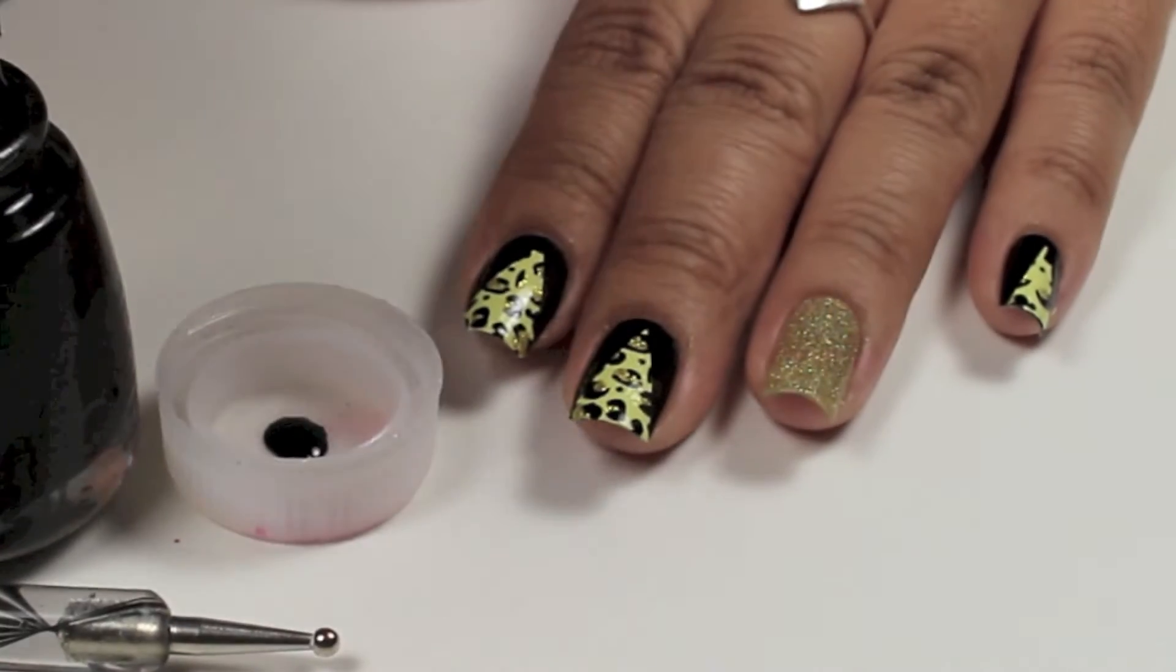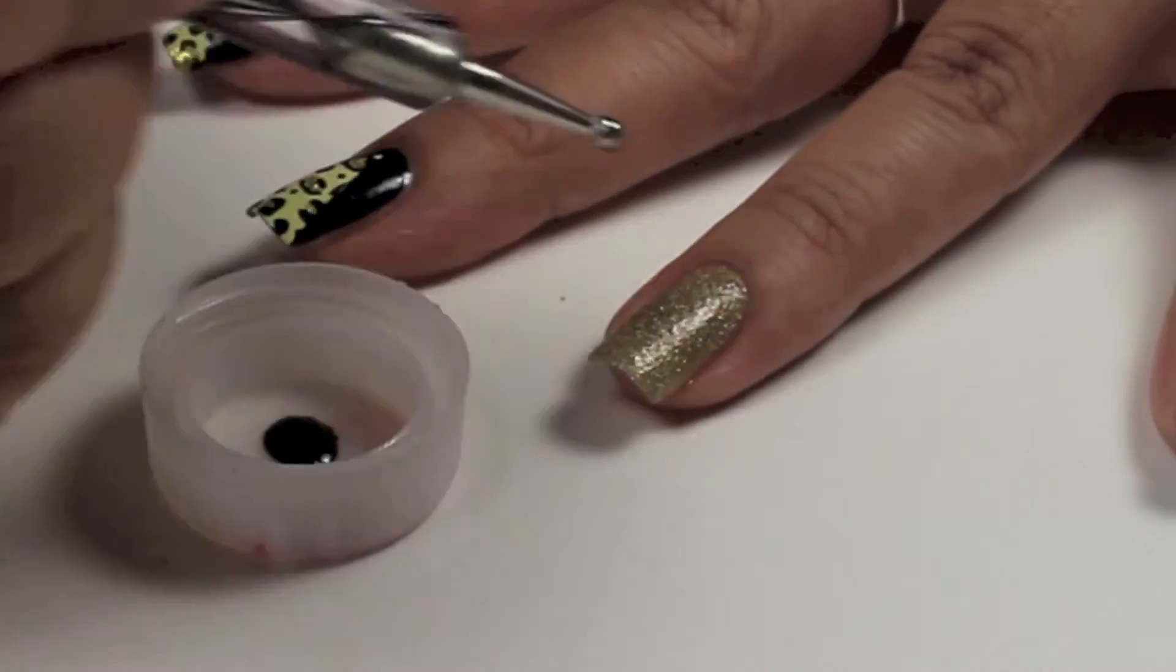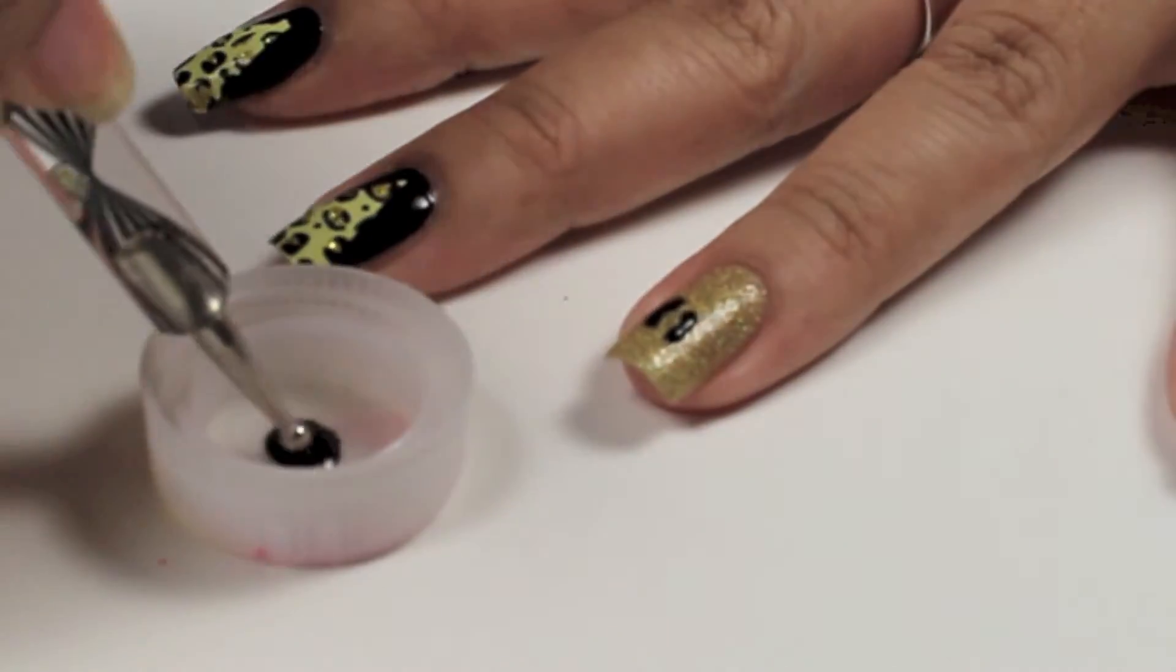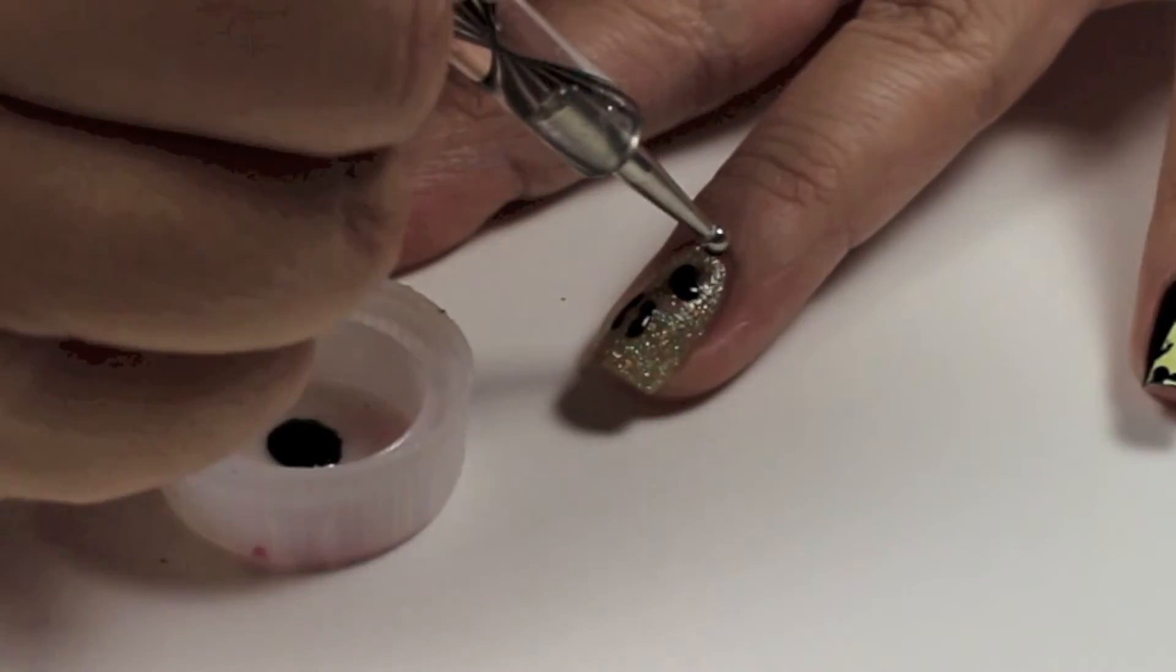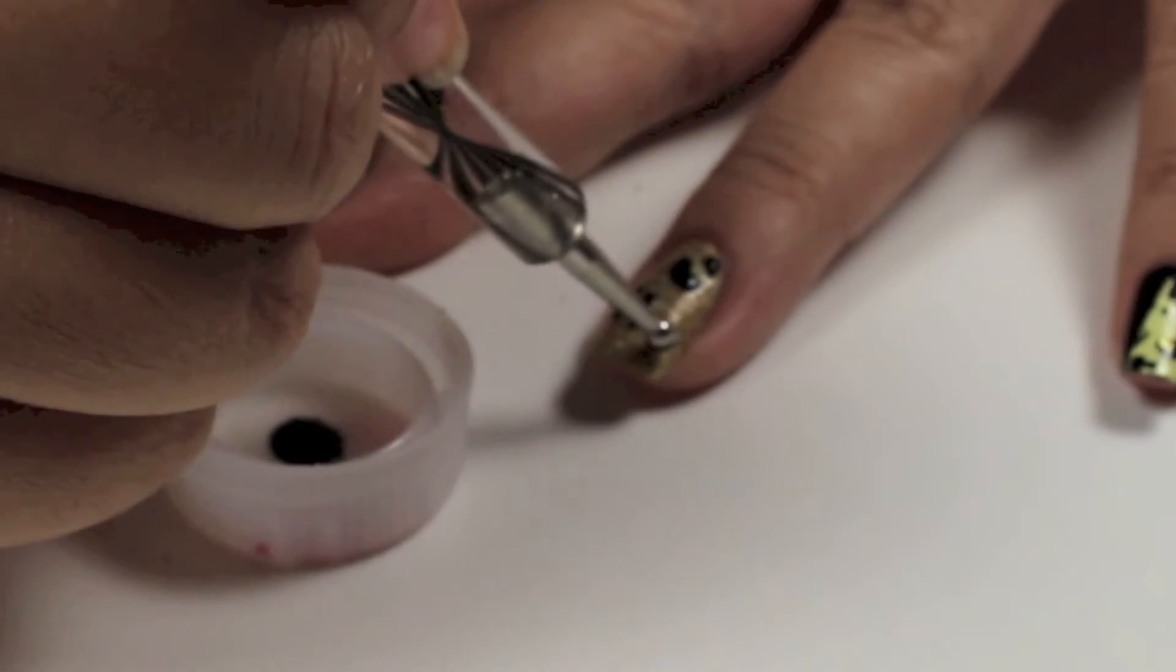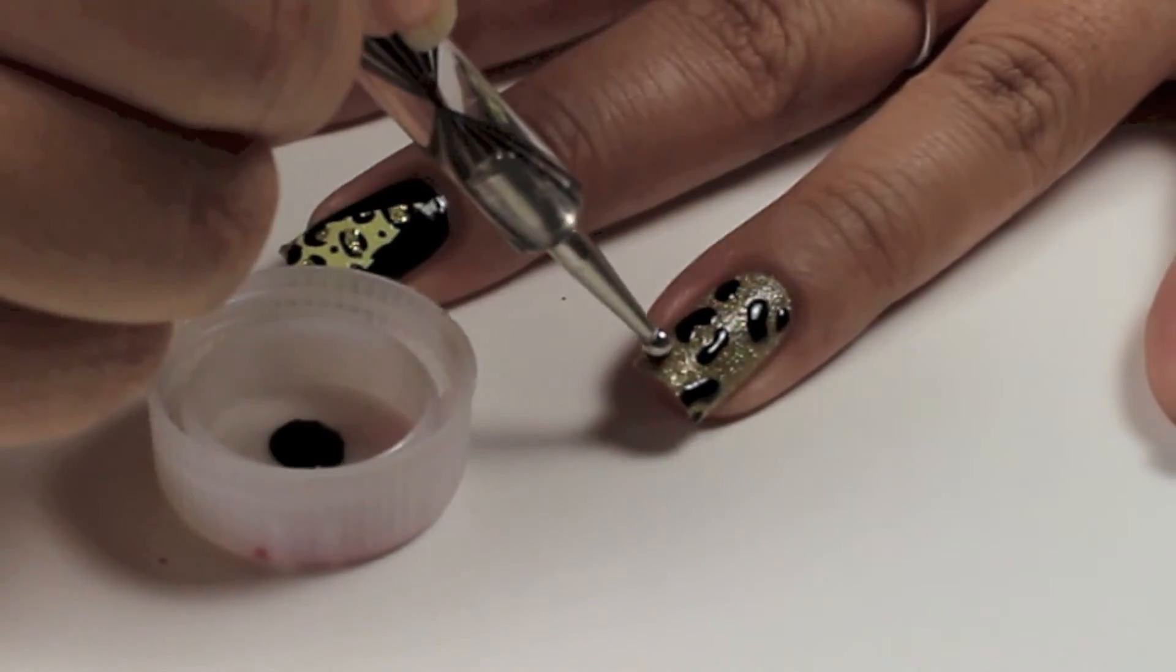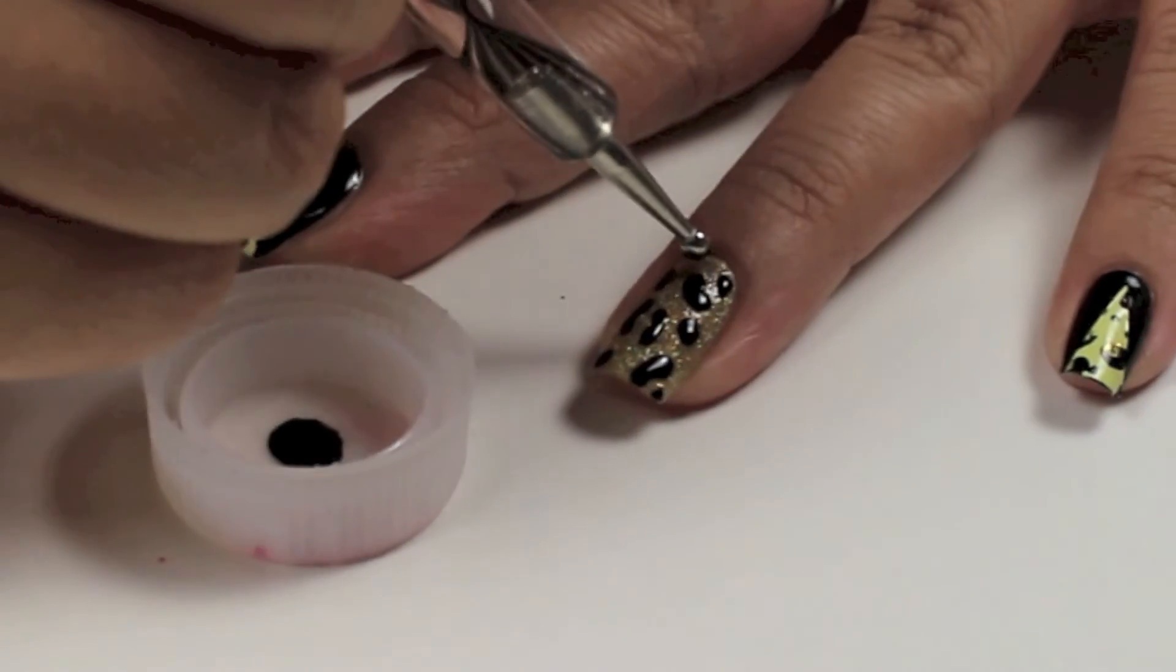Now for the cheetah print, I'm going to apply some nail polish on the bottle cap, and using a nail dotting tool, I'm just going to create like a C shape or an incomplete circle and then just little spots in between. So simple and easy and quick to do.